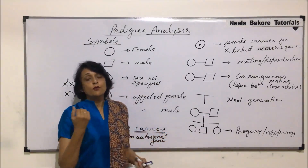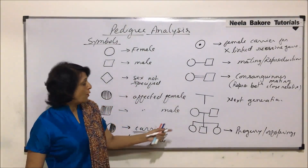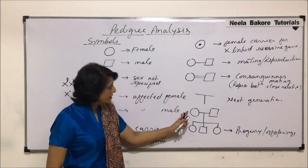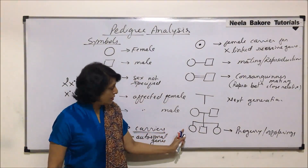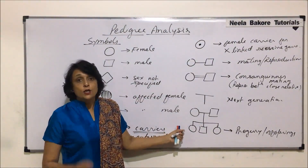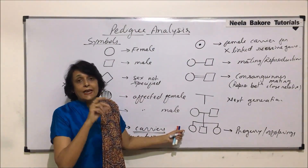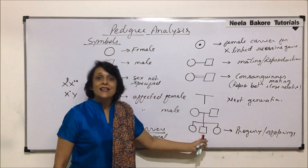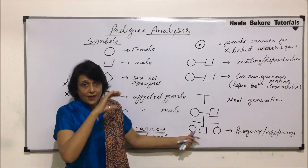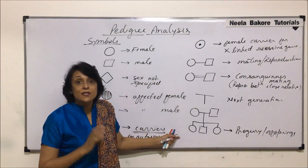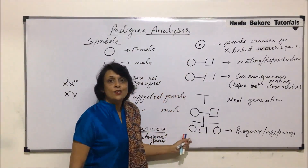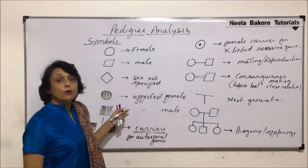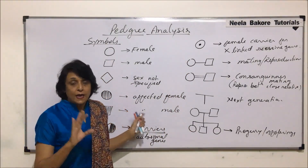The reason we draw offspring in the same sequence is that whenever we need to find the genotype of these offsprings, a question might ask: in F1, what is the genotype of the second member? So the sequence matters. This is the parent generation and this is F1. These are certain important symbols which we are going to use whenever we draw pedigree.